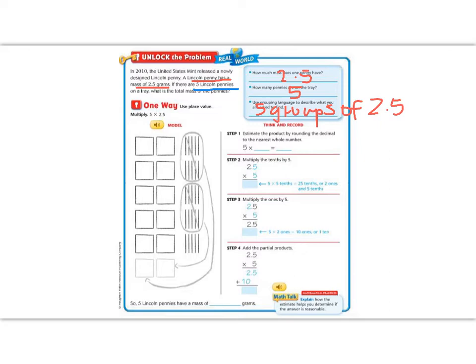So our first step is that we want to estimate. We know we're going to be multiplying 5, but it says we're going to round the decimal to the nearest whole number. 2.5, 5 makes us round up, so that's going to round to a 3. So 5 times 3 is 15. So we know that all five pennies together are going to be about 15 grams.